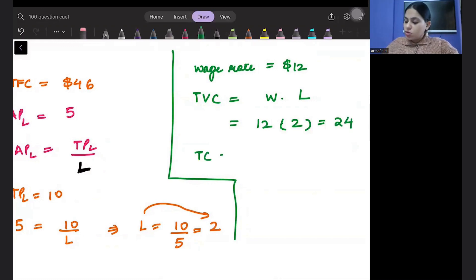So what will be my total cost? Total cost will be total fixed cost plus total variable cost. Fixed cost is 46, variable cost is 24. So this will be 70.